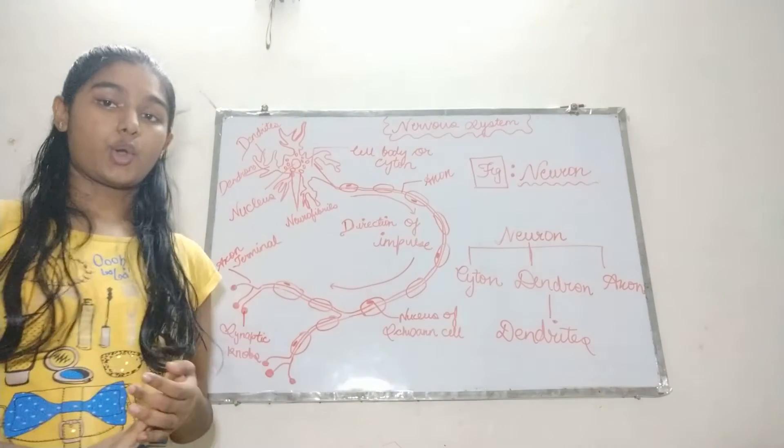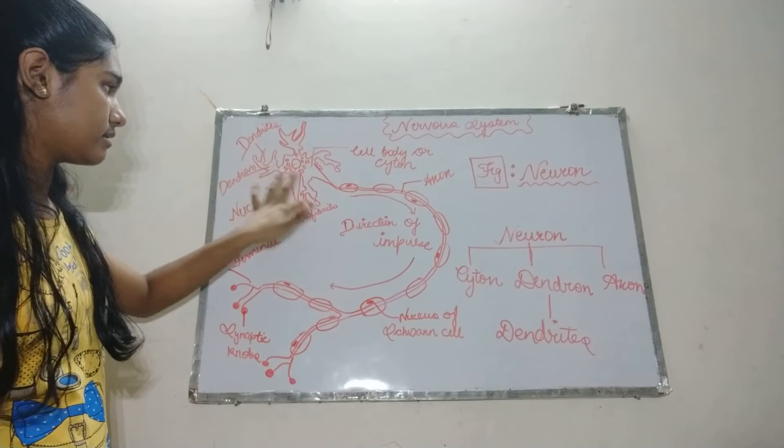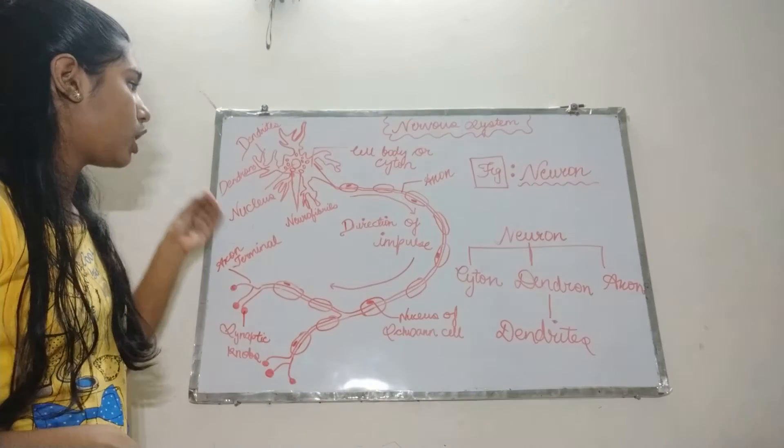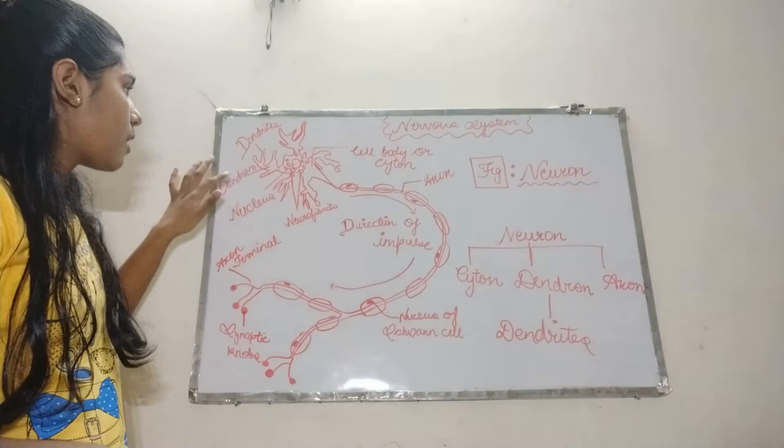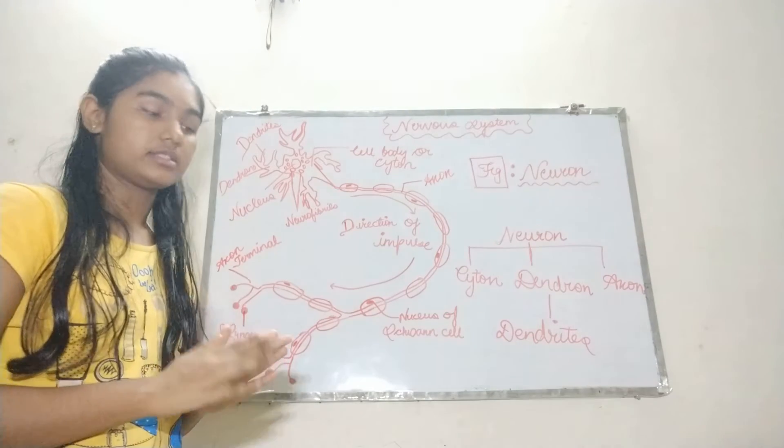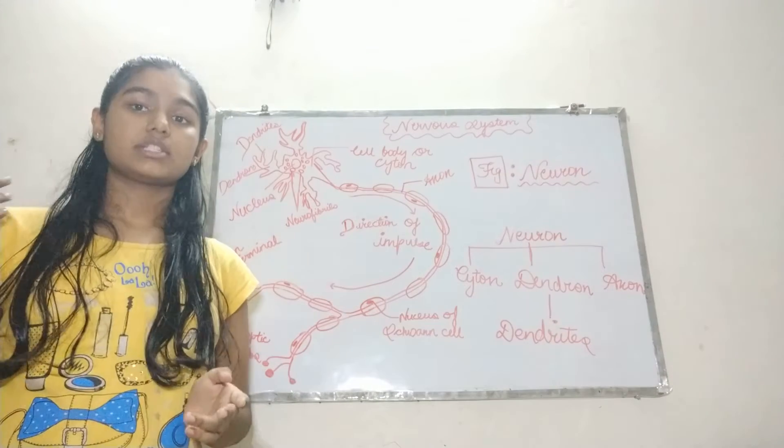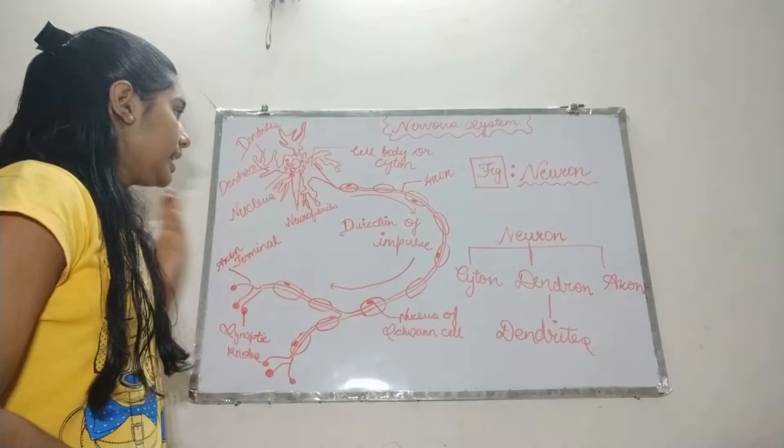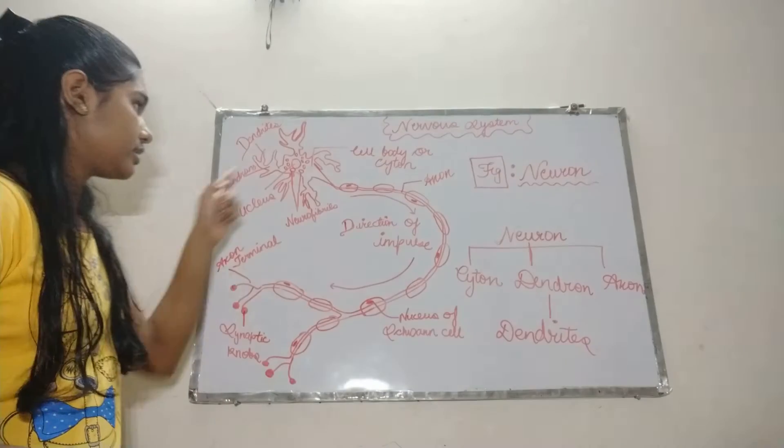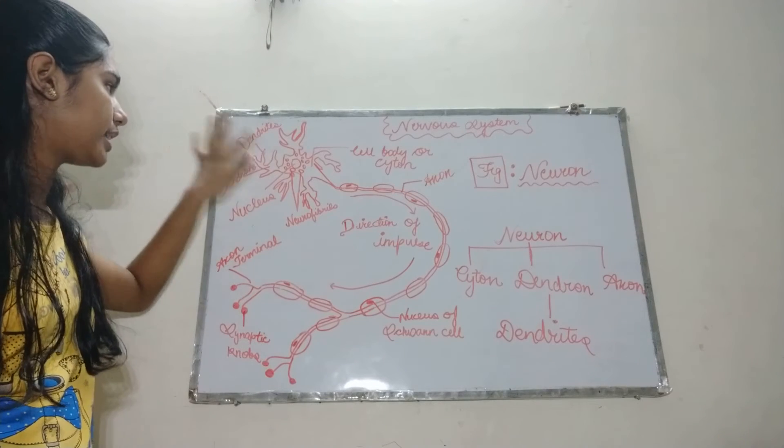Our next is dendron. The finger-like projections that arise from the cell body or cytone are called dendrons. And from these dendrons, fibers arise, tiny fibers arise, which are called dendrites. But what is the function of dendrites? It carries impulses from the outside to the cell body or cytone. The dendrites take impulses from the outside to the cell body.